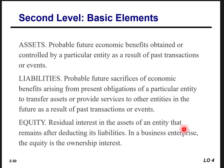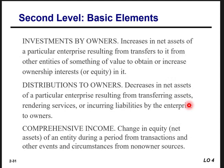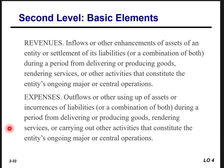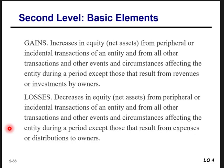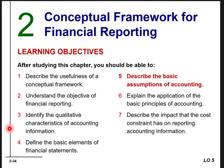Defining these elements: assets are probable future economic benefits. Liabilities are probable future sacrifices of economic benefits. Equity is the residual interest in assets after deducting liabilities. Investments by owners are increases in net assets from transfers of value to obtain or increase ownership interest. Distributions to owners are decreases in net assets from transferring assets, rendering services, or incurring liabilities to owners. Comprehensive income is a change in equity during a period from non-owner sources. Revenues are inflows or enhancements of assets. Expenses are outflows or uses of assets or incurrences of liabilities. Gains increase equity and losses decrease equity.